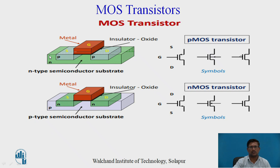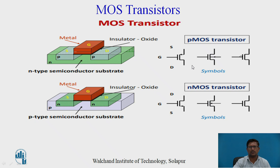In the figure, the upper structure shows PMOS with an N-type semiconductor substrate, two heavily doped P-plus regions, a polysilicon gate terminal, and insulating silicon oxide between gate and source/drain. The lower structure shows NMOS with a P-type substrate or body, N-plus heavily doped source and drain regions, insulating material between gate and source/drain, and polysilicon for the gate. The symbols for PMOS and NMOS transistors are shown, and any of these symbols can be used for designing combinational, sequential, or CMOS circuits.